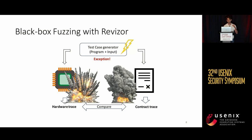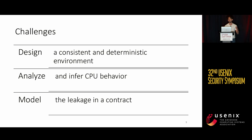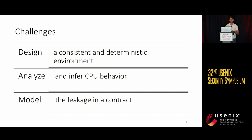This design doesn't really work when we try to test for exceptions because we are missing some requirements. Testing exceptions is challenging because we need to design an environment that is consistent and deterministic, meaning we want to trigger an exception in the same way, in an aligned way, on both the model and the CPU. We also want control over the execution flow to redirect execution to the fuzzer, collect the traces, and execute the next test case. There is also an experimental challenge: understanding what the CPU is doing, what kind of speculation it performs, and modeling the leakage formally into a contract.